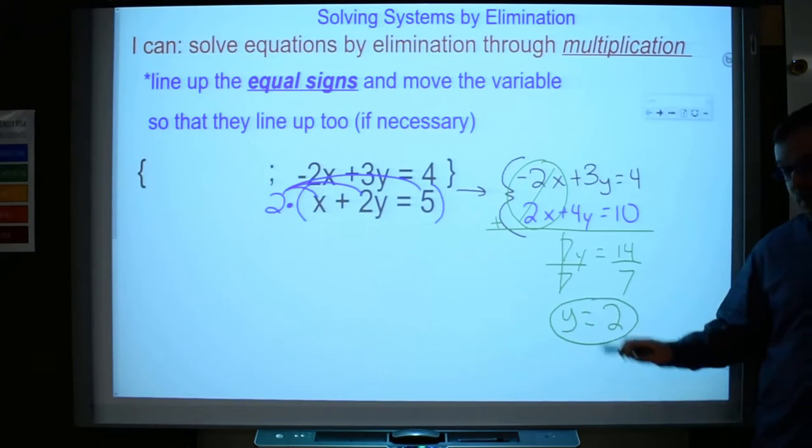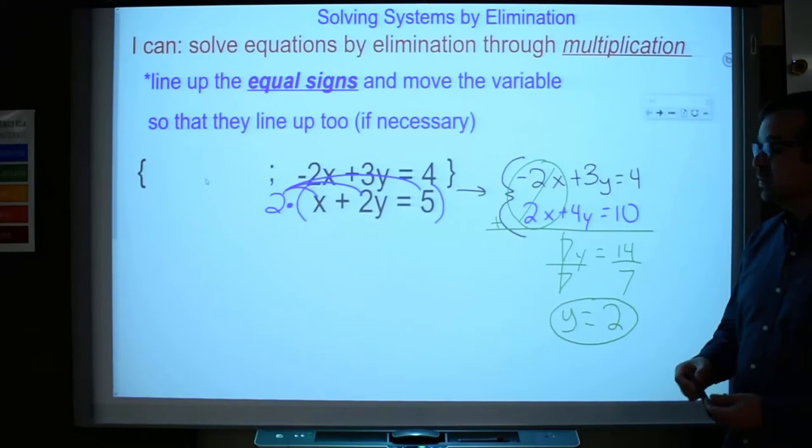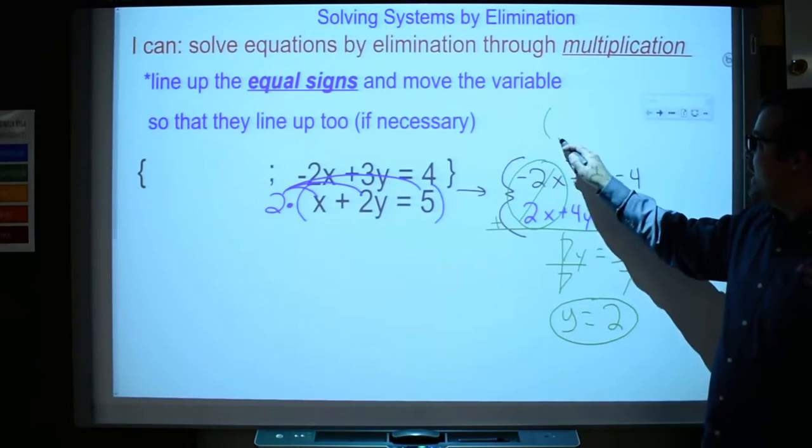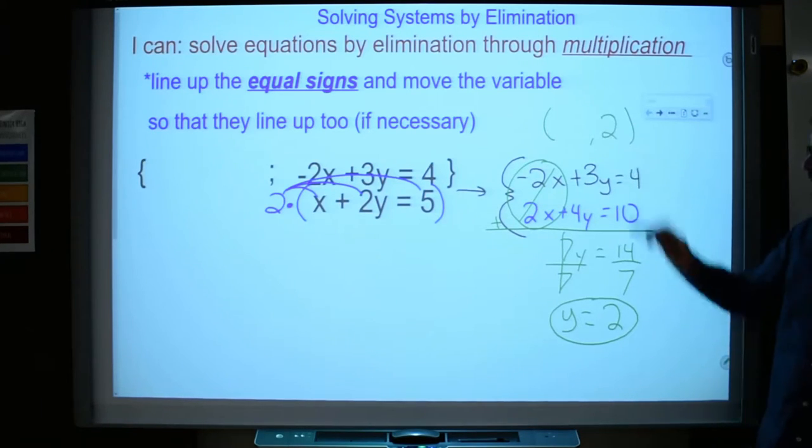Now I'm not done, am I? I have a system of equations. I have two variables, x and y. So really what I'm looking for is an x comma y solution, an ordered pair. And I only have the y right now, that's 2.